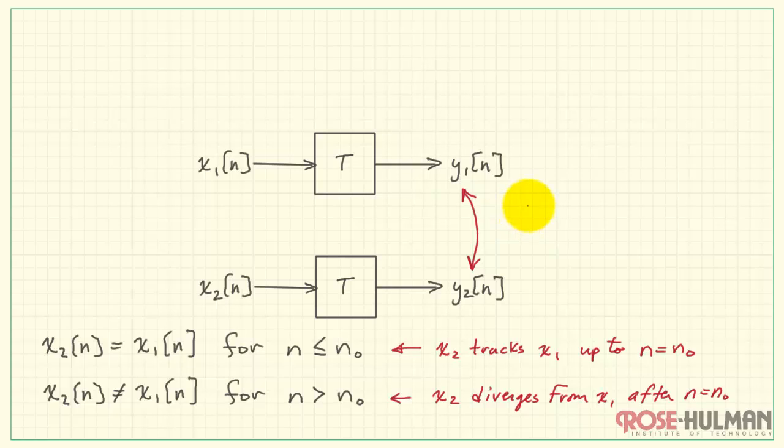The question then is when we evaluate both of these outputs at that time n naught, that is, if we look at Y2 of n naught and compare that to Y1 of n naught, if they are in fact the same for all possible choices of n naught, then the system is said to be causal.